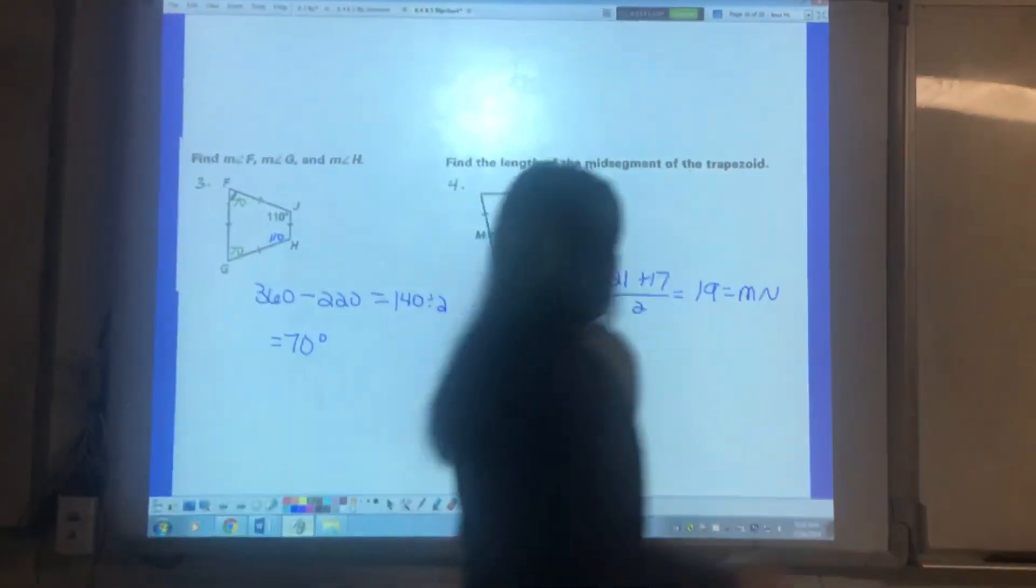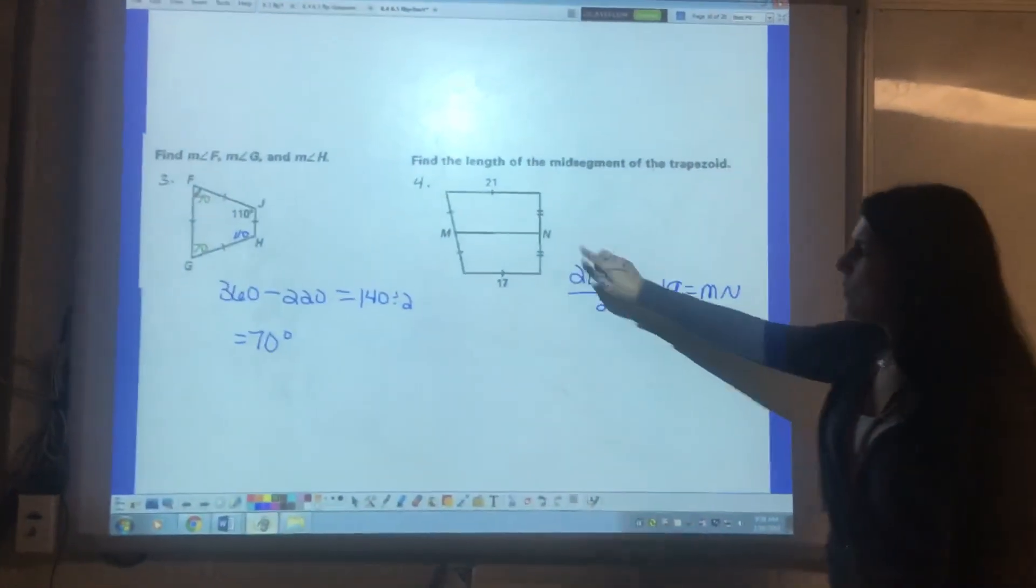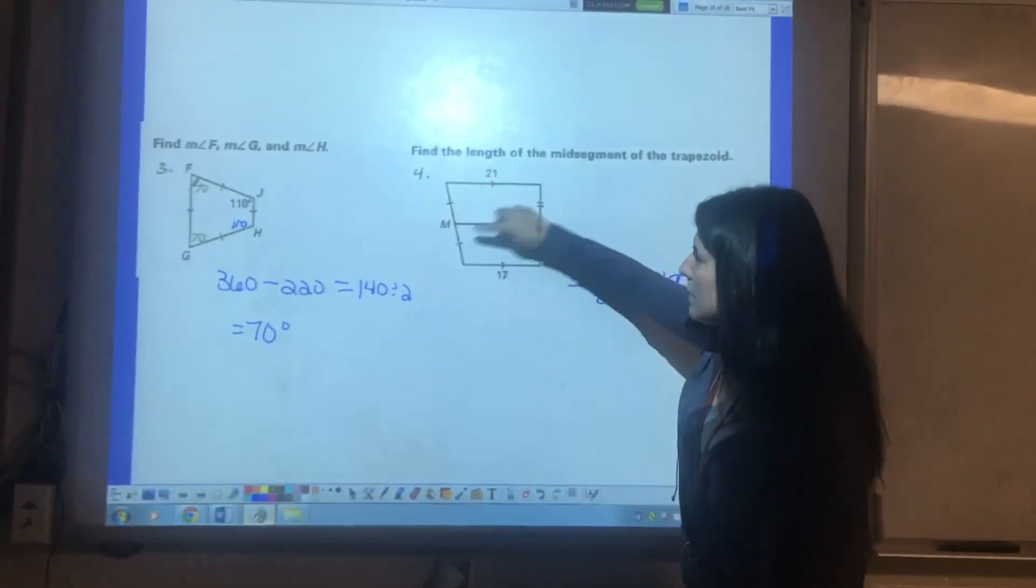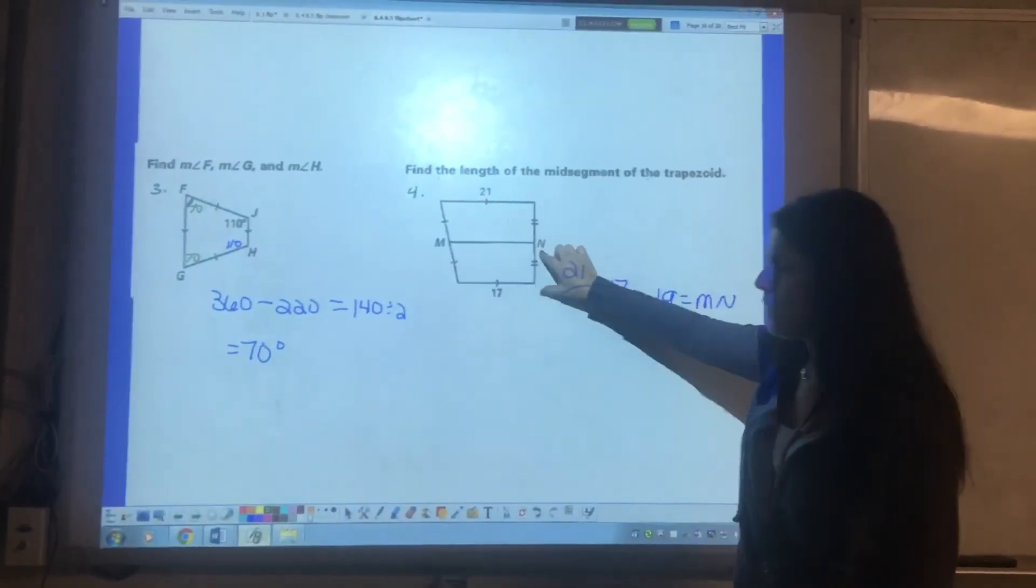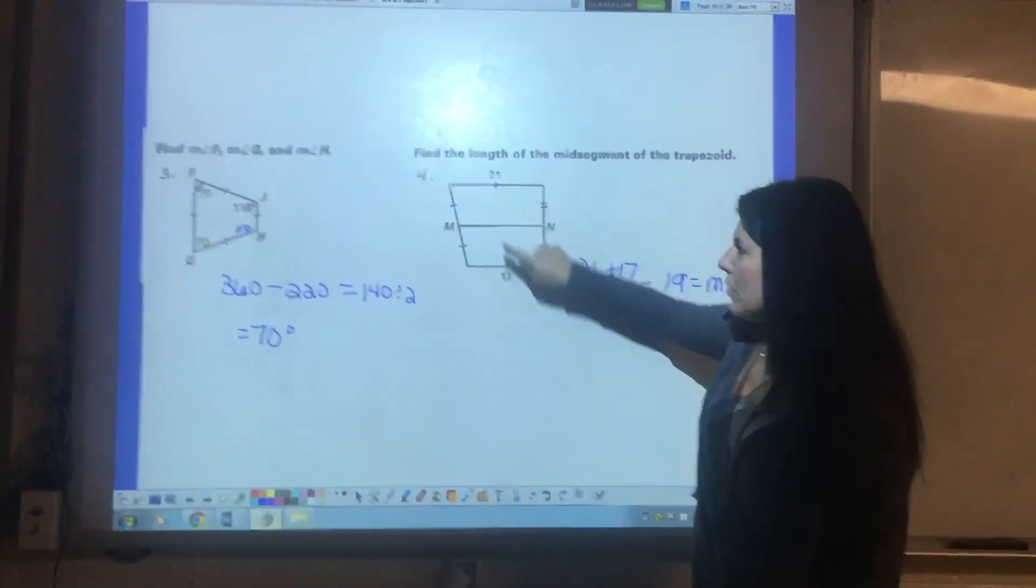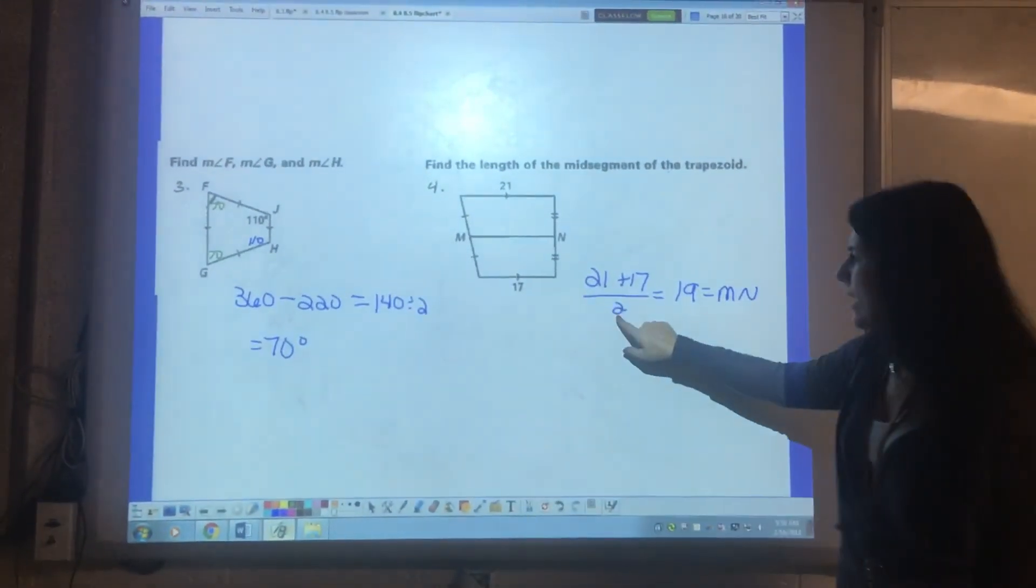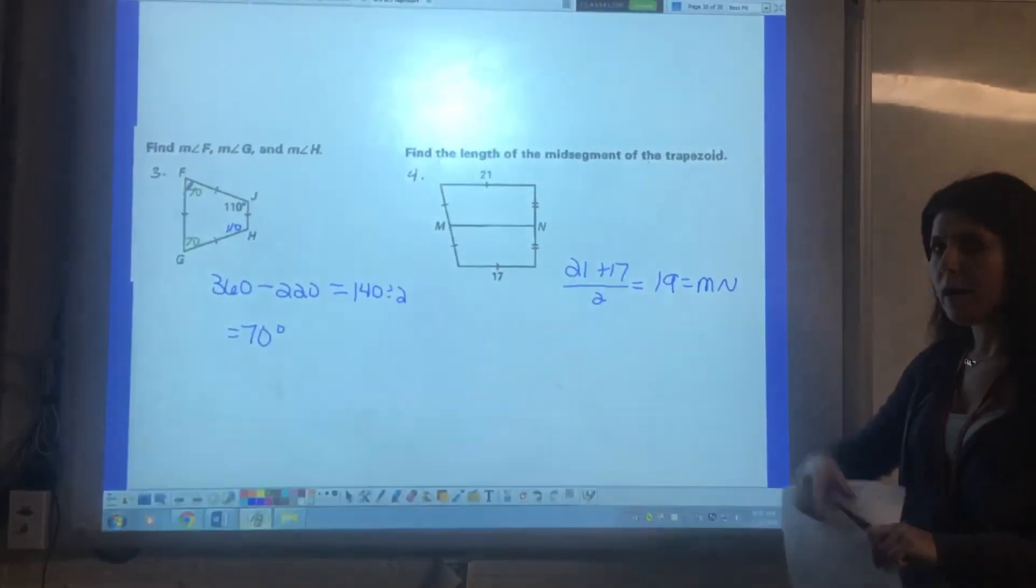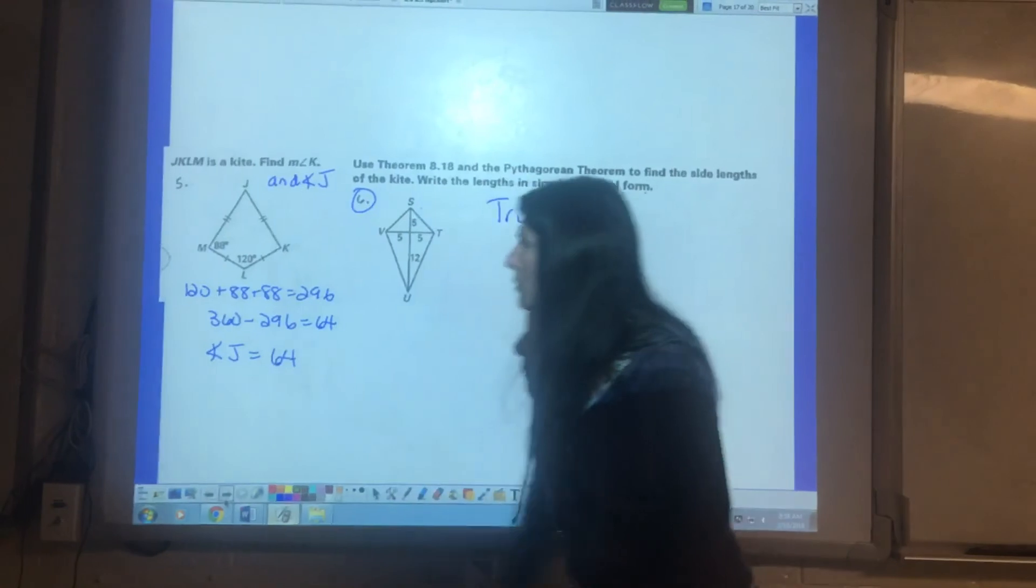Number four. This is the mid-segment theorem I was talking about not long ago. They're asking for the length of this mid-segment. We know it's a mid-segment because there's congruent parts here. That tells me that it divides it exactly in half. So adding these two parallel lines and dividing by two, MN is 19. Fairly simple formula. Just make sure you remember it.